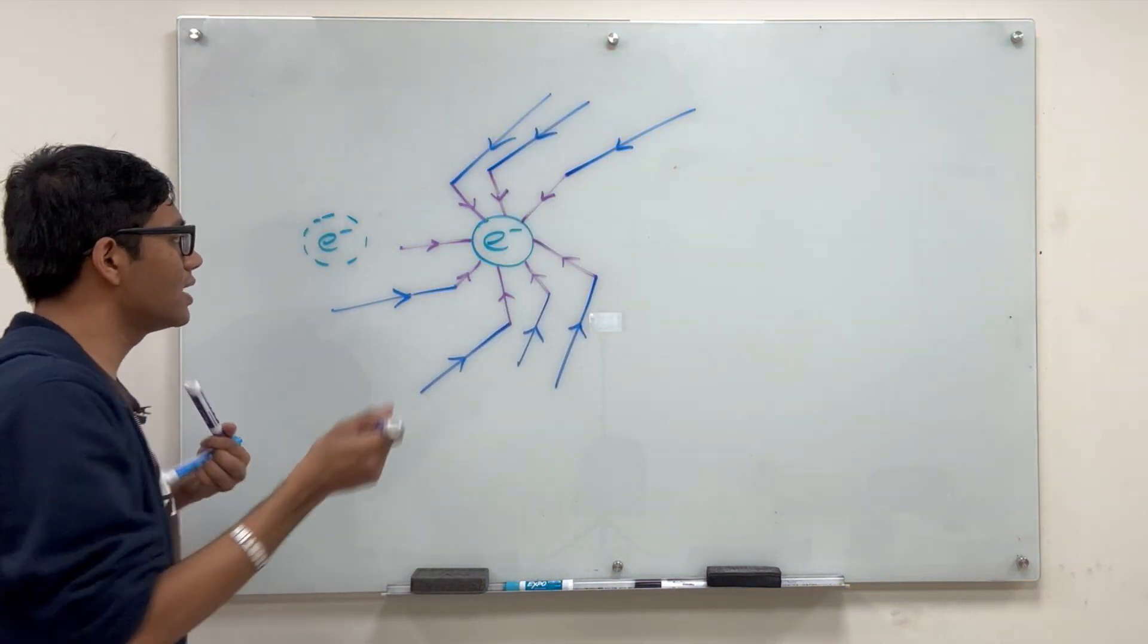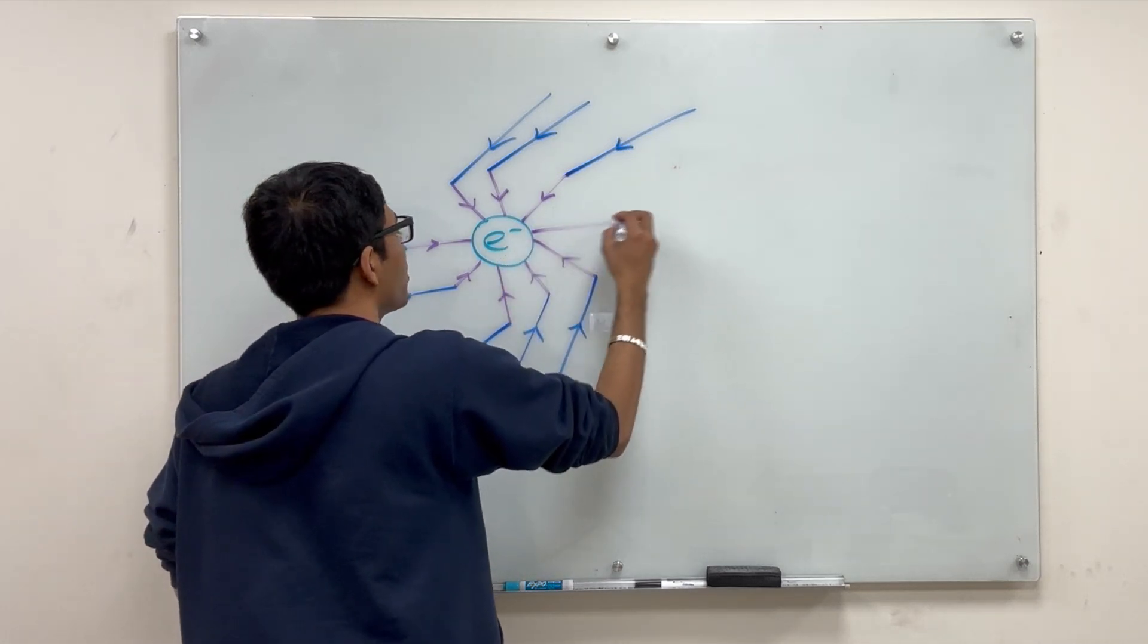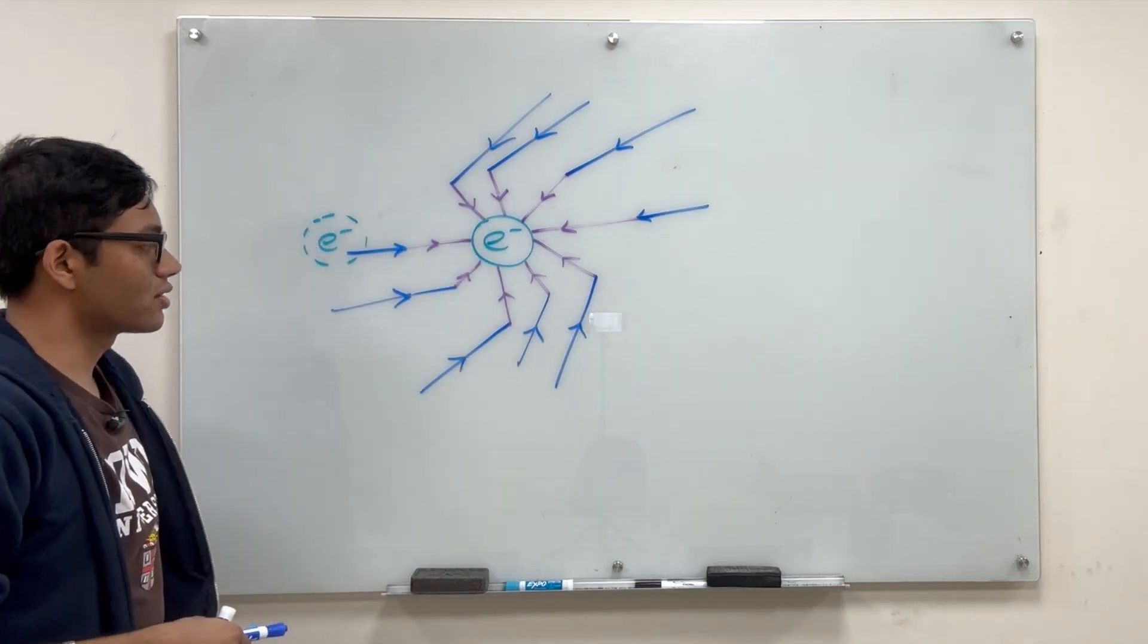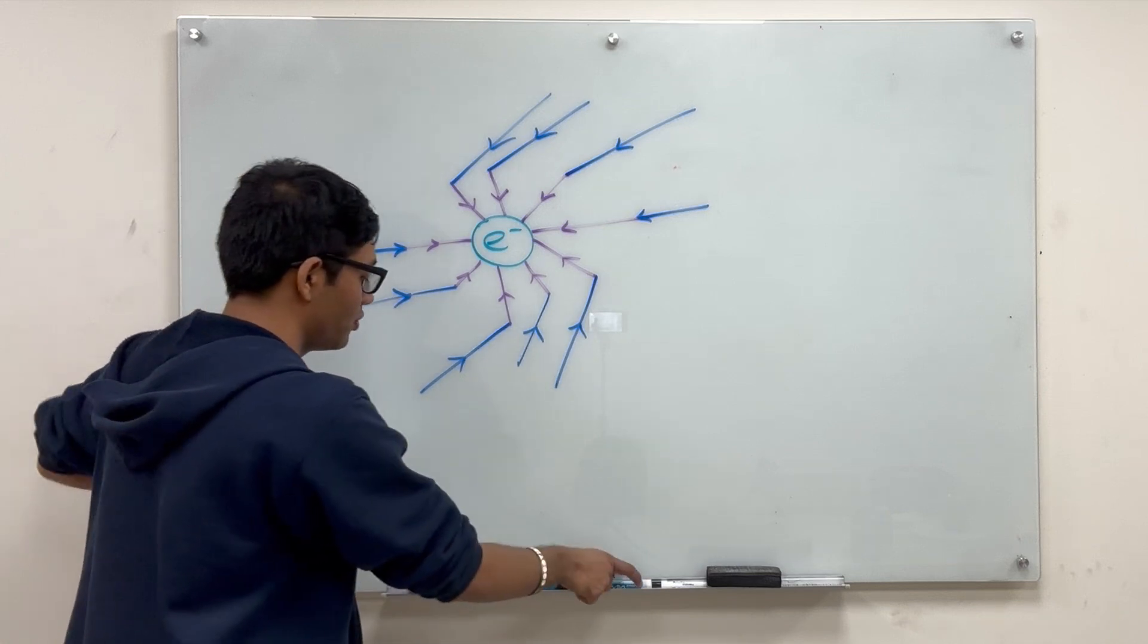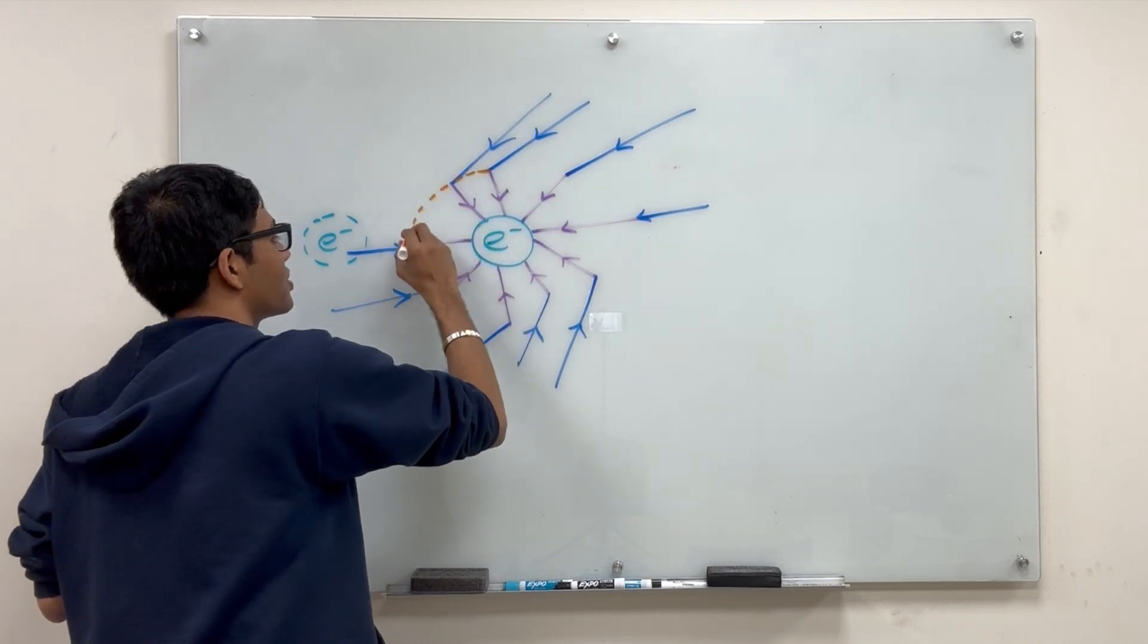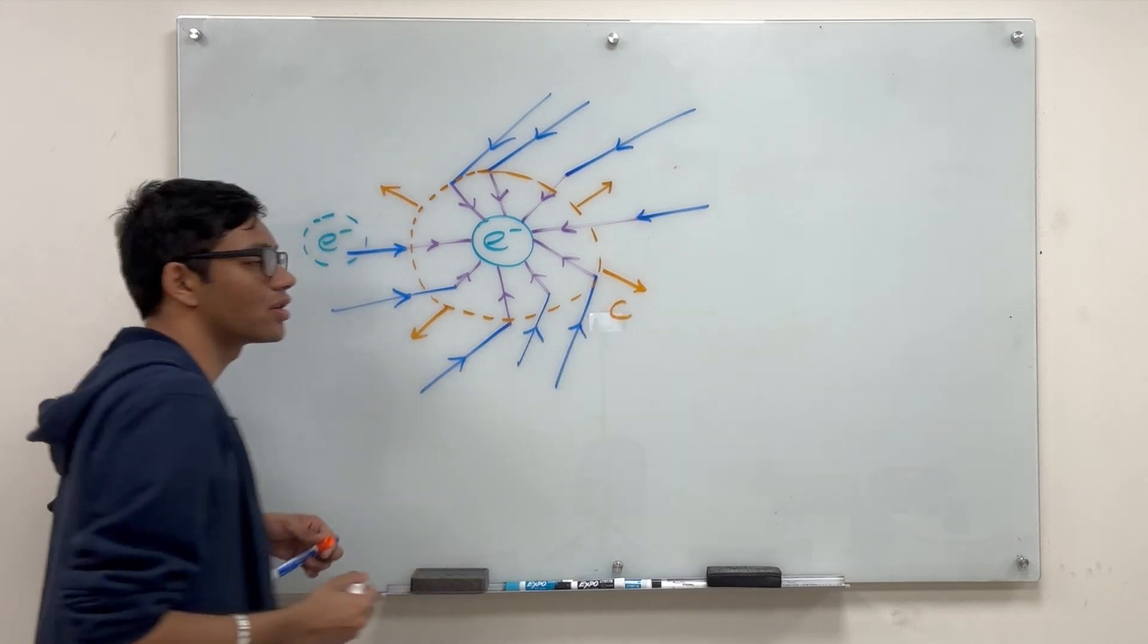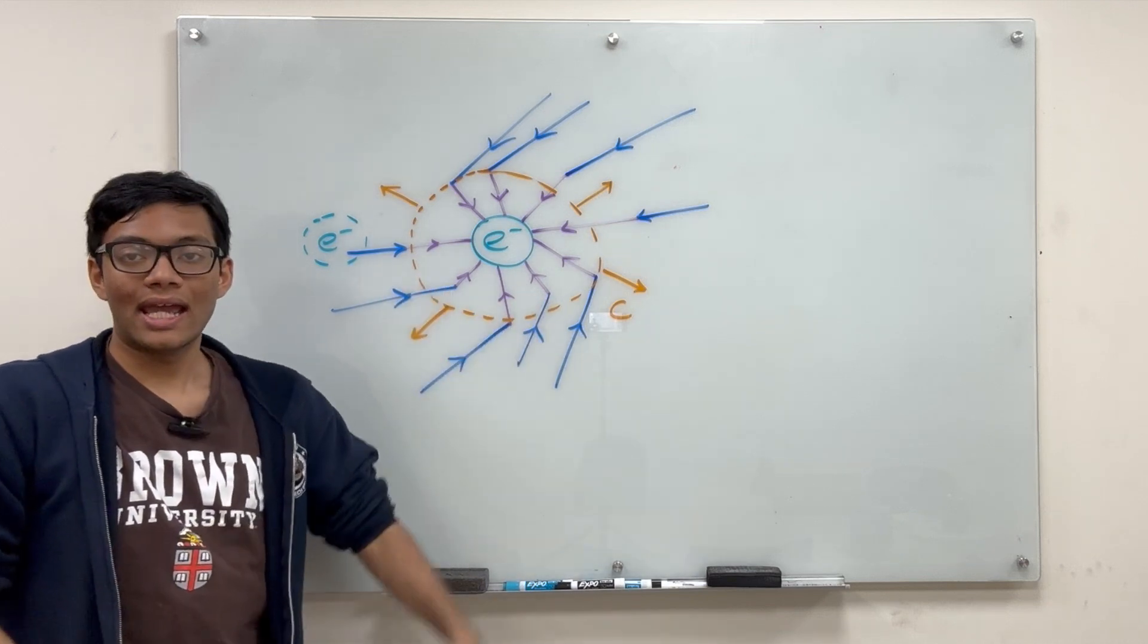So moral of the story is that information propagates at the speed of light. So there will actually be an information bubble surrounding the electron, and this bubble expands at the speed of light, informing the electric field lines further away that the electron has moved. This is the radiation you might see from an electron moving at some given speed.